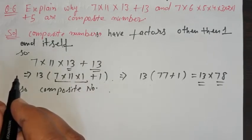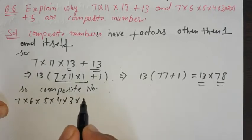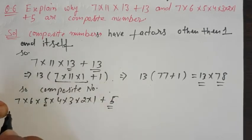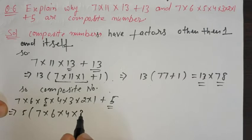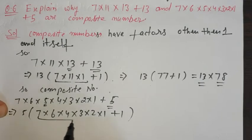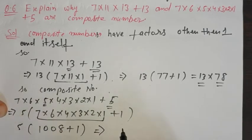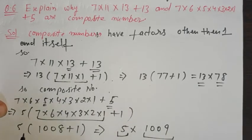For the second part: 7 × 6 × 5 × 4 × 3 × 2 × 1 + 5. Take 5 as common: 5 × (7 × 6 × 4 × 3 × 2 × 1 + 1) = 5 × (1008 + 1) = 5 × 1009. This also has factors other than 1 and itself, so it is also a composite number.